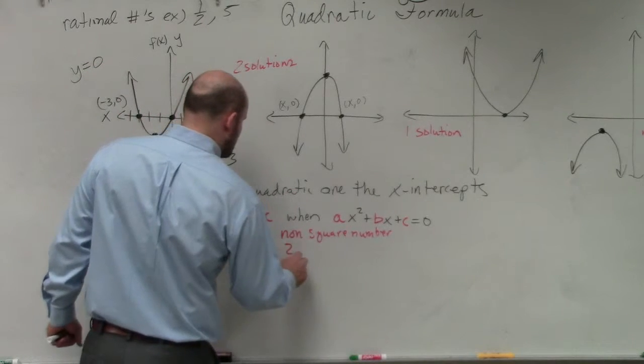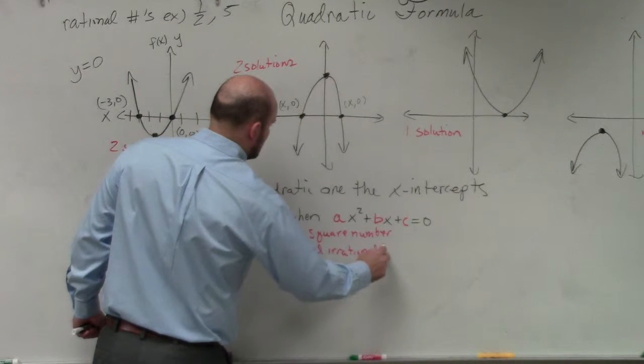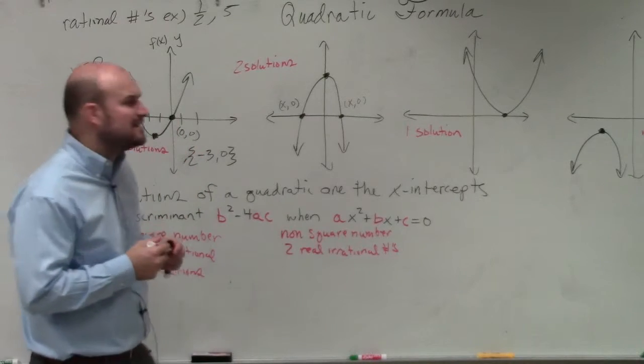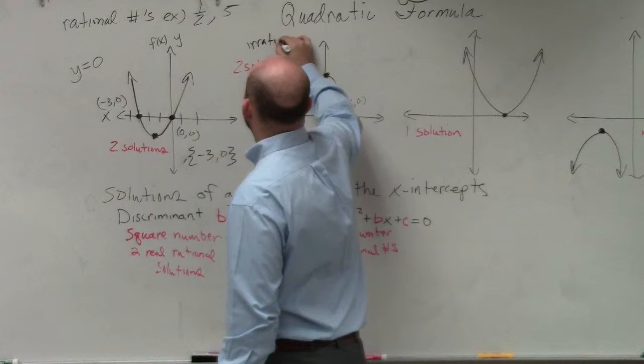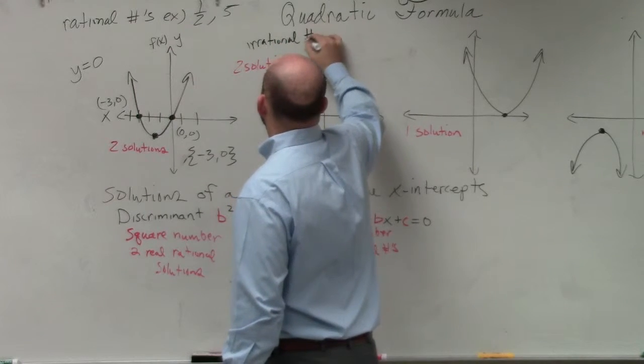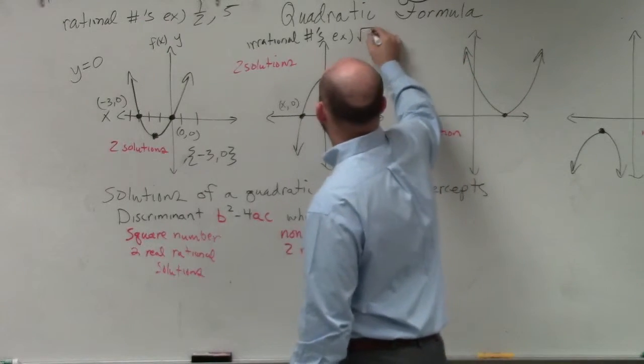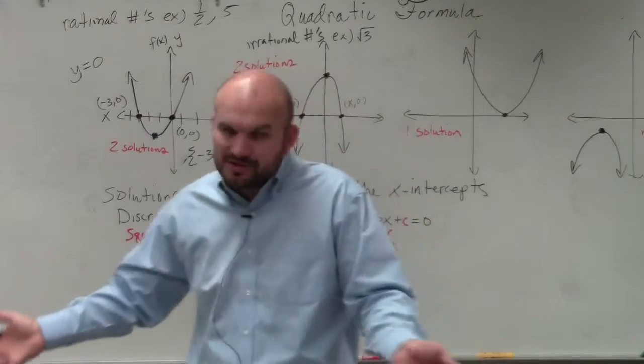So that's going to be two real irrational numbers. What are irrational numbers? Irrational numbers would be numbers, like I said, you cannot evenly take the square root of, like the square root of 3. You can't take the square root of 3, so we just leave it like that. It's an irrational number.